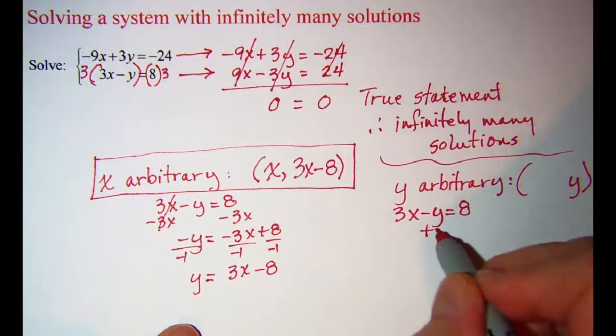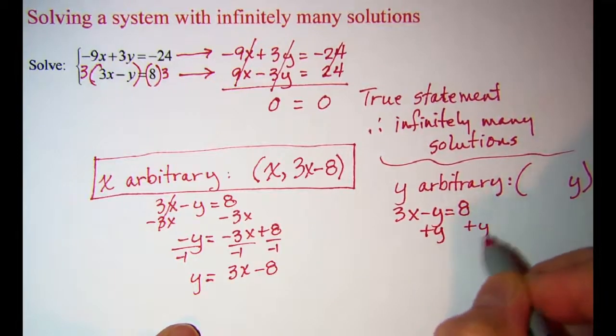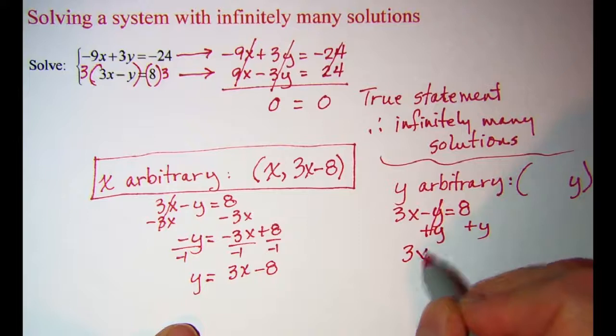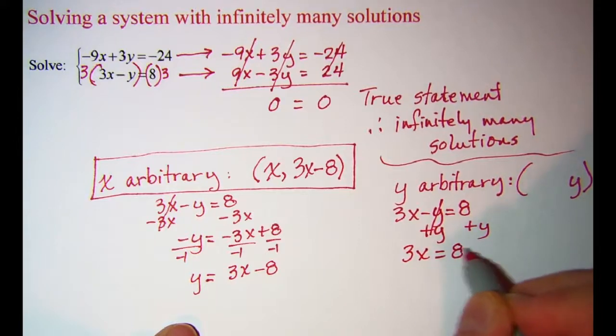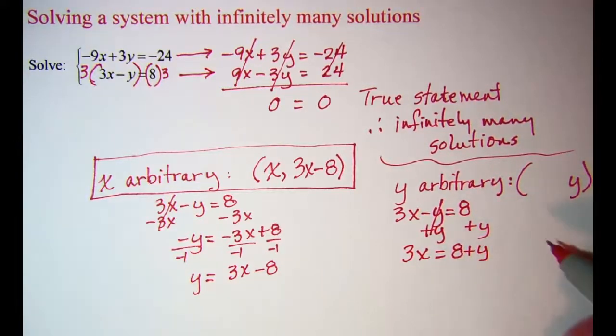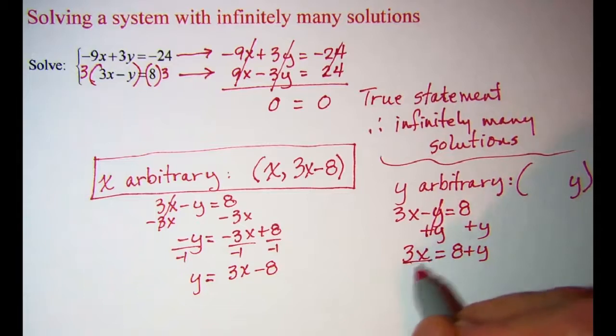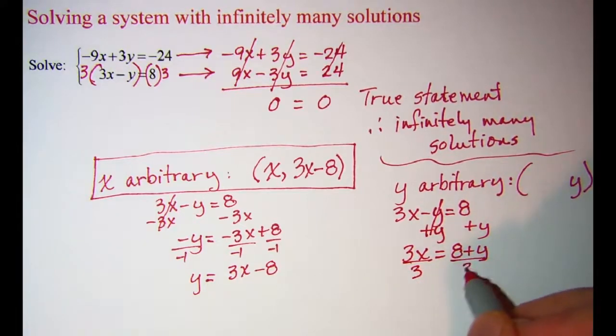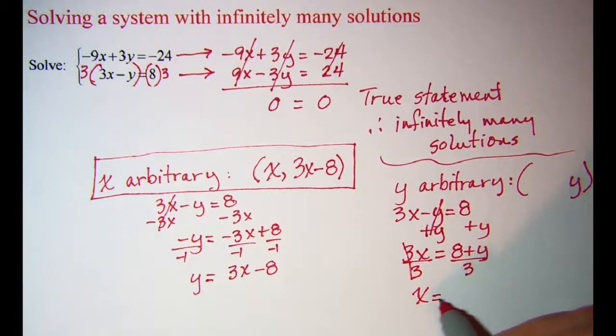So I have 3x is equal to 8 plus y, and then divide by 3. So x is equal to 8 plus y divided by 3.